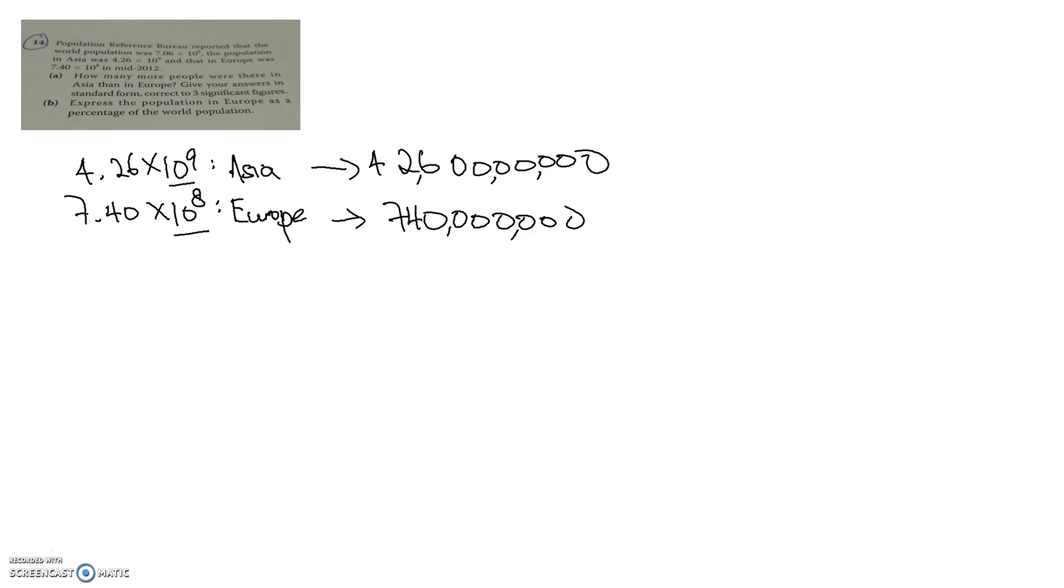We know the population in Asia is 4.26 times 10 to the power of 9. What we can actually do is to make it the same 10 base. So 4.26 times 10 to the power of 9 is the same as 42.6 times 10 to the power of 8. In this case, now we see that the 10 to the power of 8 is the same as that in Europe. So what we can do is actually 42.6 times 10 to the power of 8 minus 7.40 times 10 to the power of 8. Since we have the same 10 base, we take 42.6 and then minus 7.40.